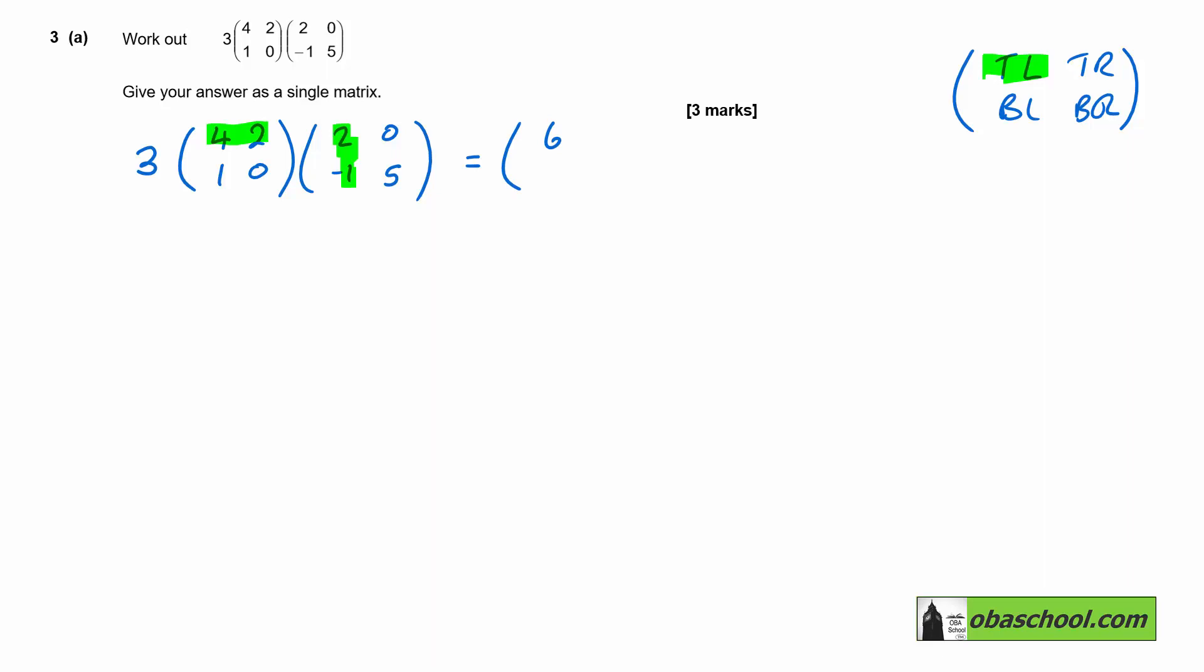Then to get top right, we do top times right. So four times zero, two times five gives us ten. Don't forget the three that was in front here.